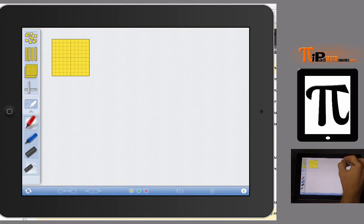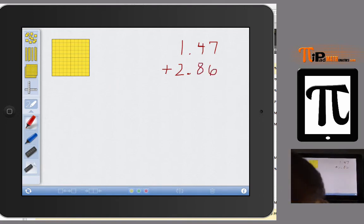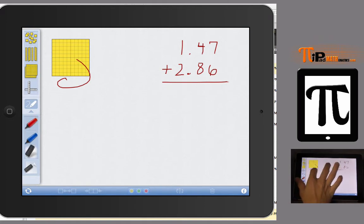I'm going to start off by adding 1.47 plus 2.86. My little stylus is giving me some issues right now so we will just make do with it. I may just go to my finger on this one.